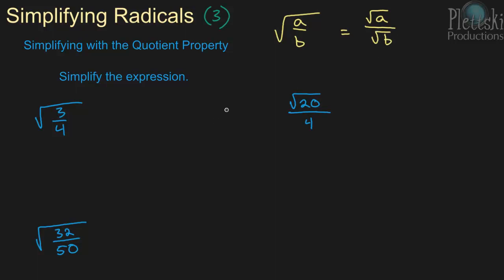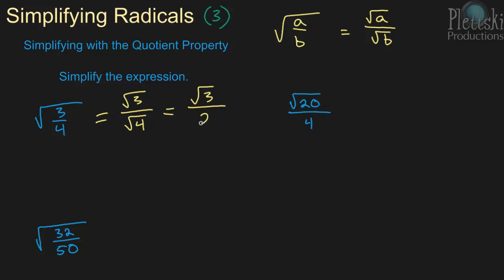So we're going to use that in this one. We also will use the product property for one of the examples. So the square root of 3 over 4 equals the square root of 3 over the square root of 4. And then we'll just have the square root of 3 over 2, since the square root of 4 is just 2. And we're done with that one.